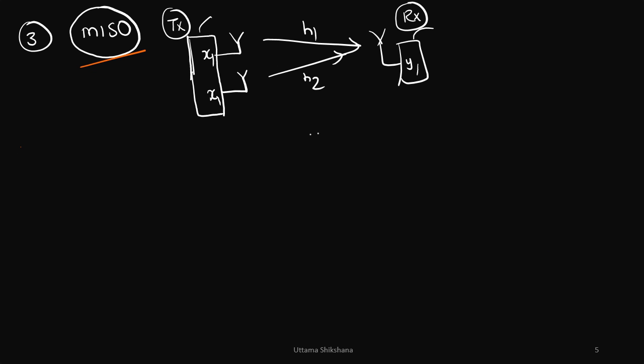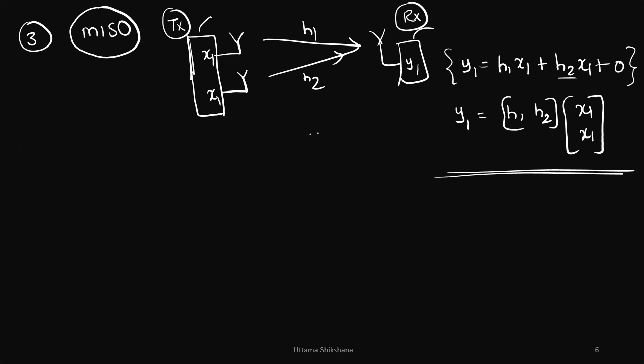So moving into the next configuration, multiple input single output. In this, from the transmitter I have two antennas, receiver just one antenna. Now I have considered that the same symbol x1 is transmitted from both the antennas. So at the receiver what will be the equation? There is only one equation because we have only one antenna. So y1 is equal to this is the equation. As you can clearly see that we have multiple copies of x1 again. This is also a kind of spatial diversity, but since now it is achieved because of Tx, it is called Tx spatial diversity.